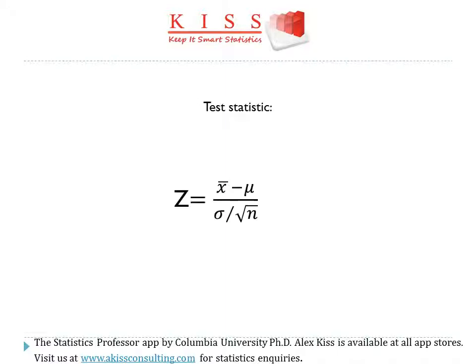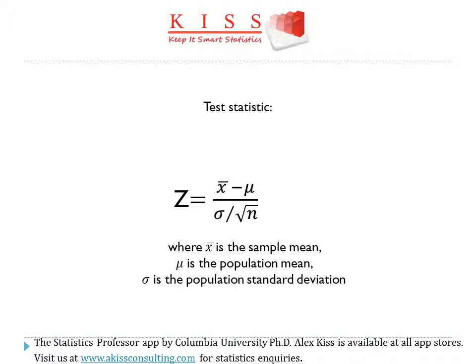The test statistic will be of the form Z equals x-bar minus mu divided by sigma over the square root of n. X-bar is the sample mean in this formula, mu is the population mean, sigma is the population standard deviation, and n is the size of your sample.